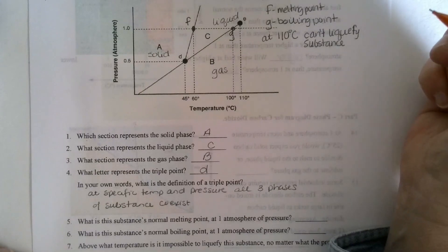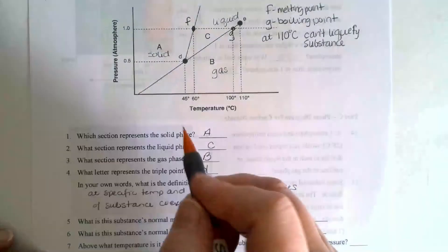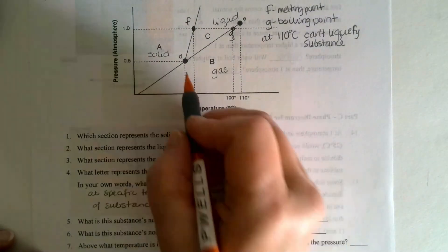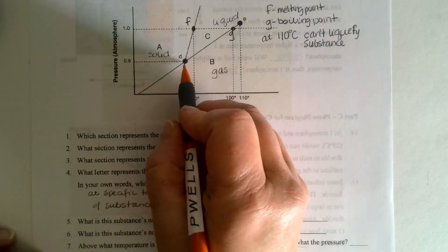At one temperature and pressure, do all three phases coexist? So now they're asking us for two. This is called the triple point. So at letter D, the triple point,